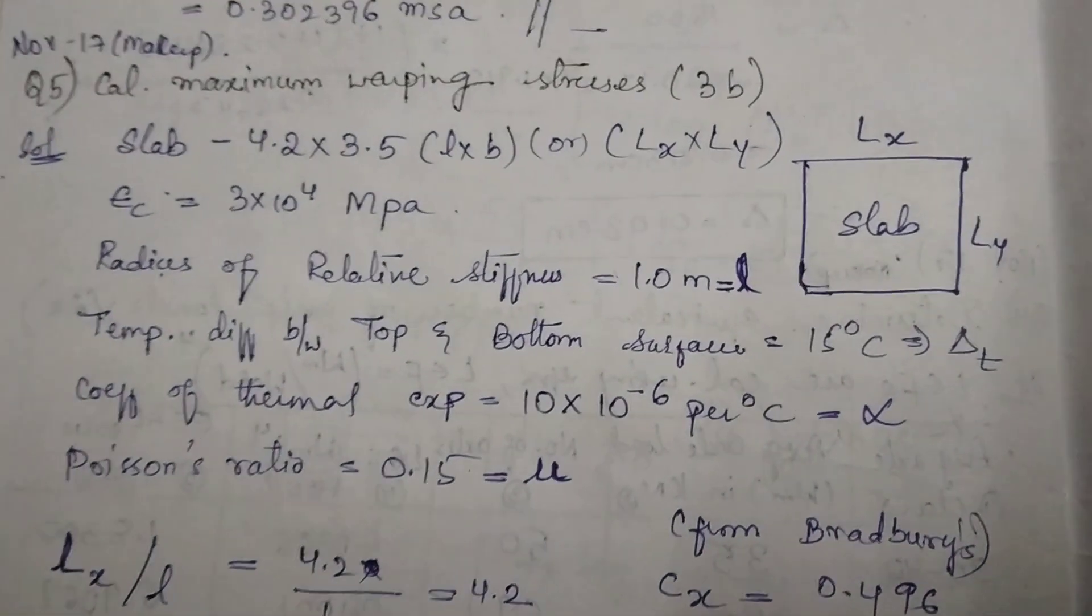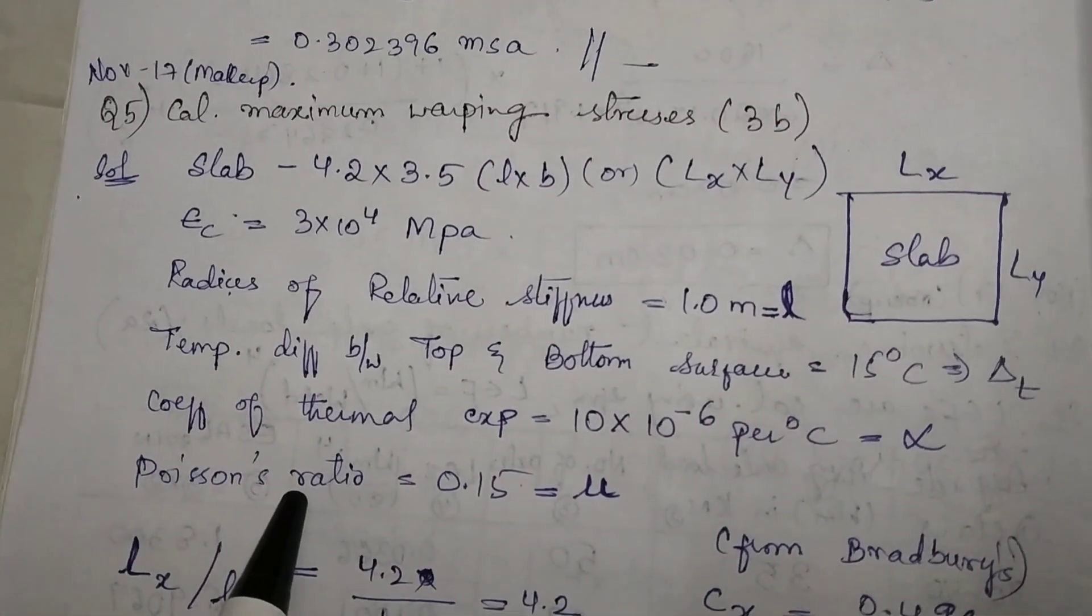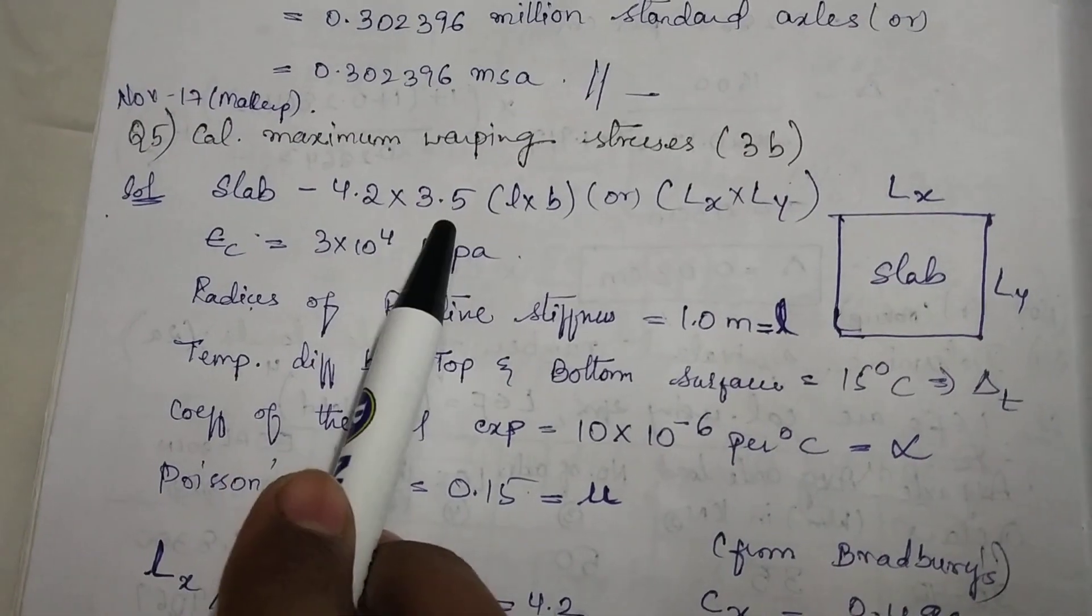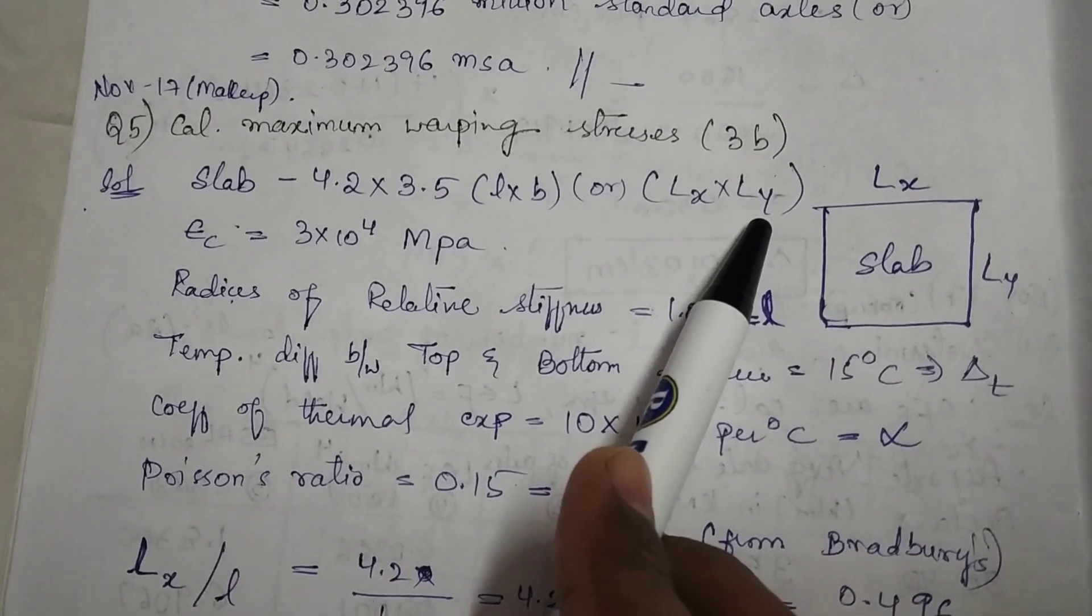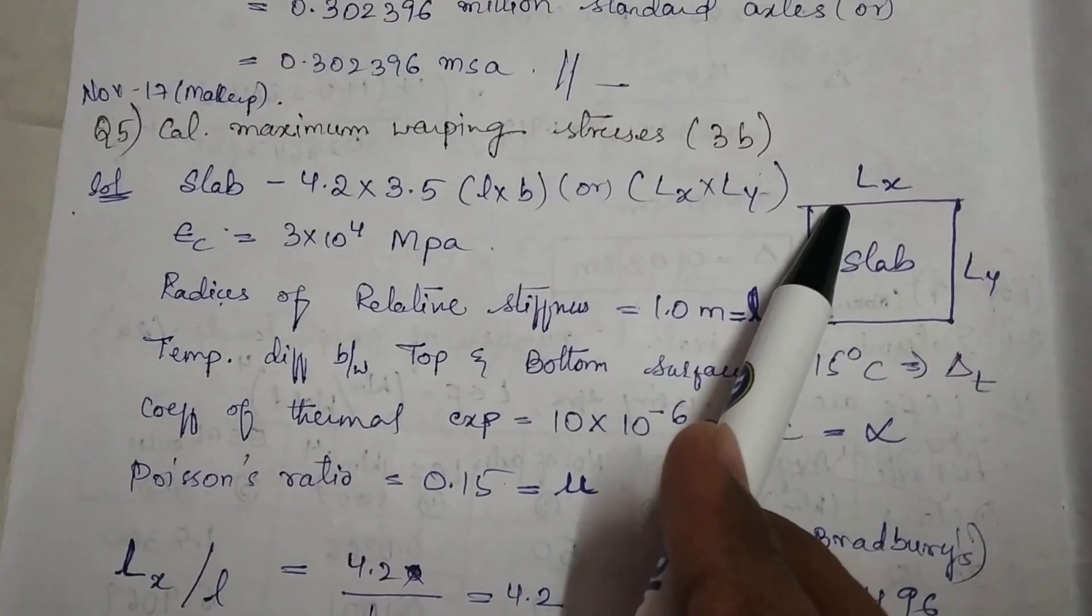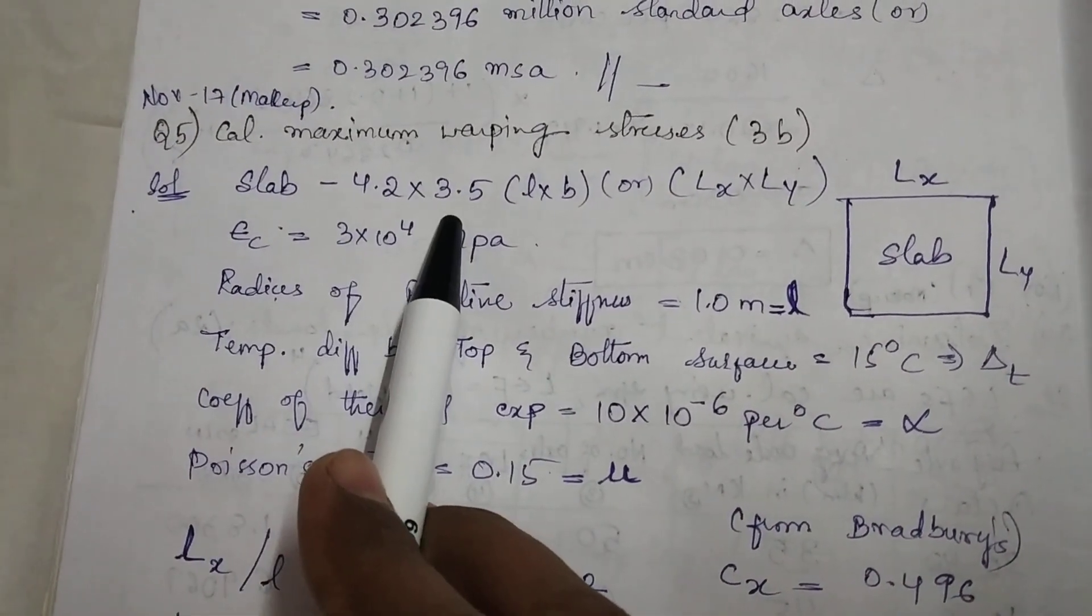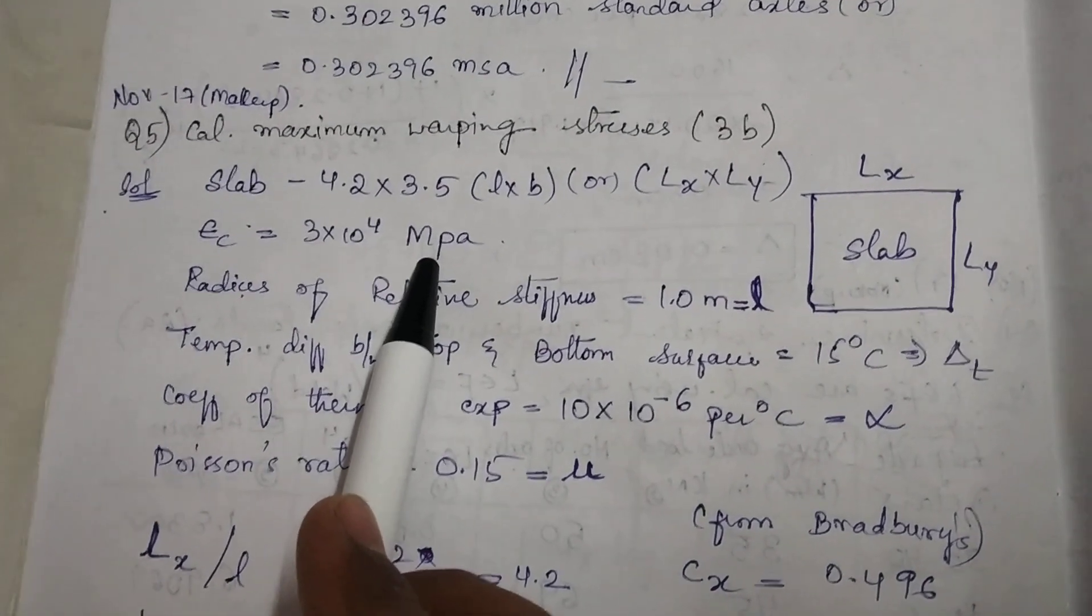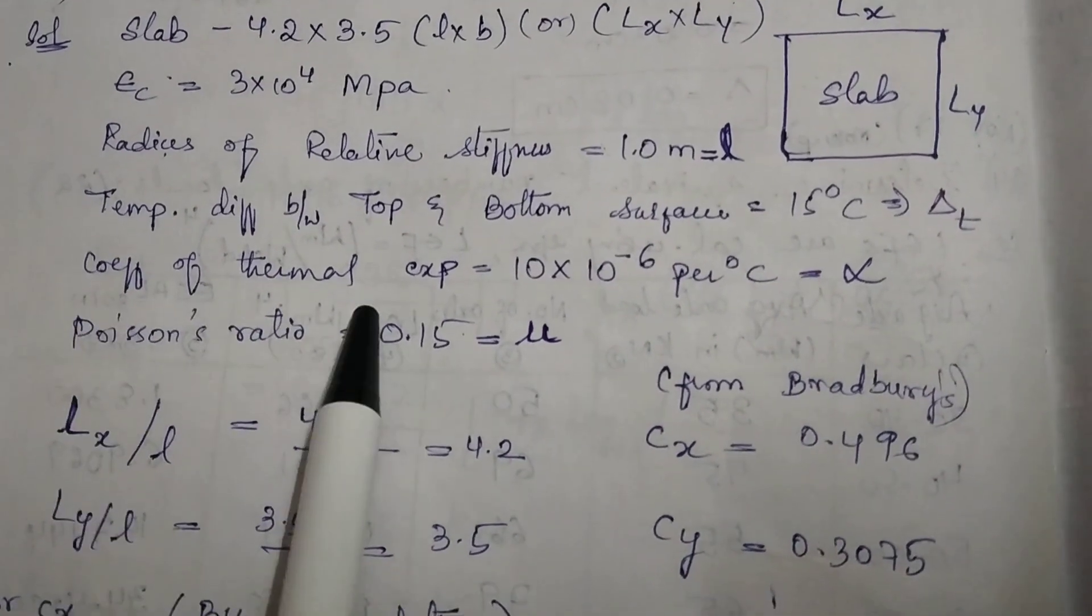First, we write the given data. The slab dimensions are 4.2m × 3.5m, written as Lx × Ly. When designing a concrete pavement, we consider it as a slab with two directions: Lx (lengthwise) and Ly (widthwise). Next, we list: E (elastic modulus), l (radius of relative stiffness), ΔT (temperature difference), α (coefficient of thermal expansion), and μ (Poisson's ratio).